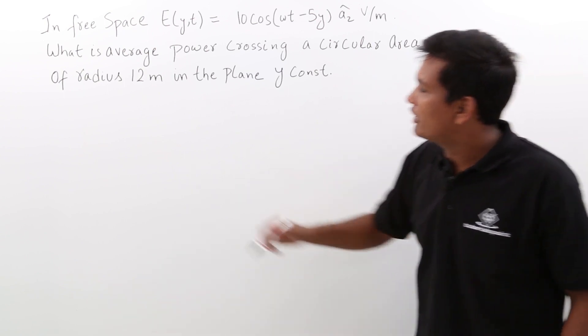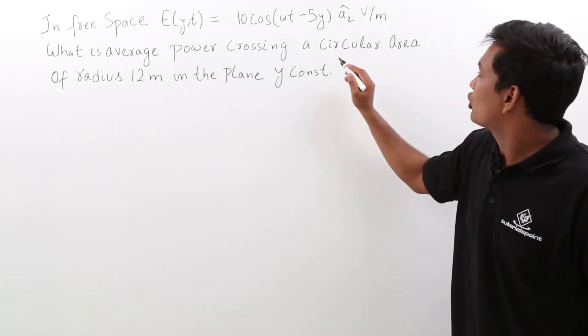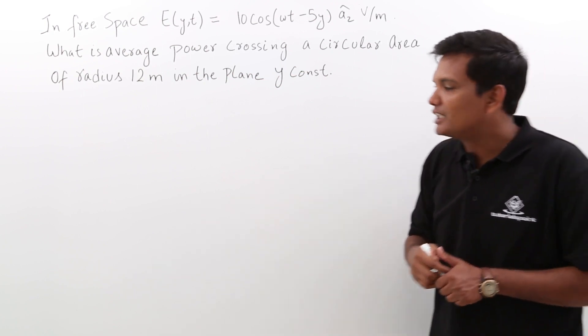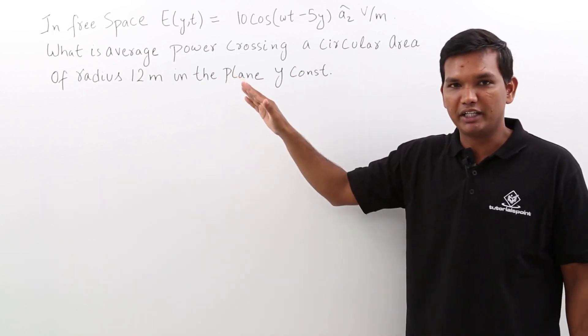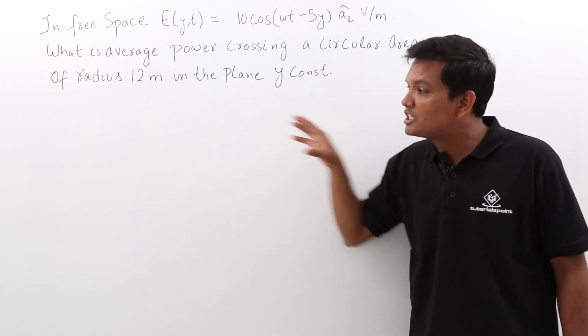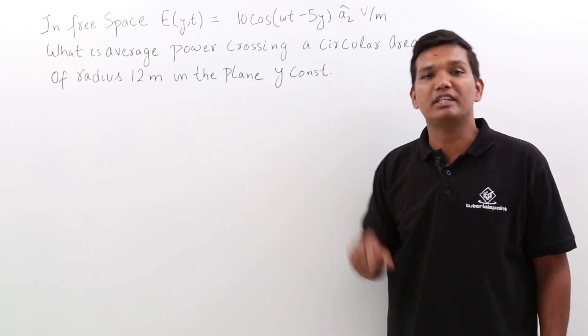Now, we have to find the average power crossing a circular area of radius. It means it is nothing but if a wave is propagating, it is hitting a circular area and what is the average power across that.